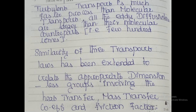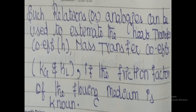The similarity of three transport laws has been extended to relate appropriate dimensionless groups involving heat transfer, mass transfer coefficients, and friction factor. These dimensionless groups include Reynolds number, Prandtl number, Stanton number, Schmidt number, etc. Such analogies can be used to estimate the heat transfer coefficient (h), mass transfer coefficients (kg and kl), and friction factor (f), if the friction factor of the flowing medium is known.